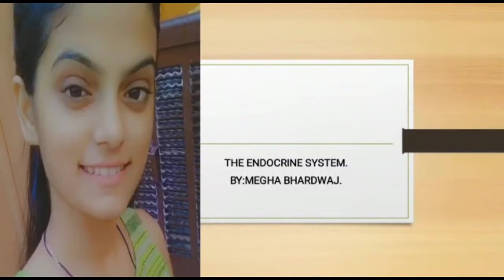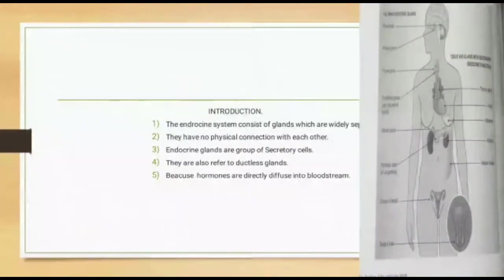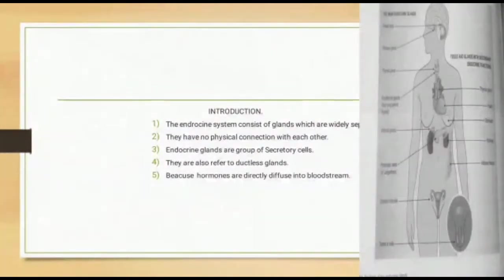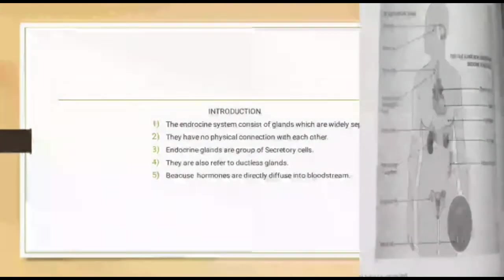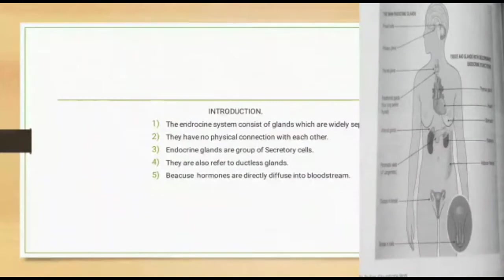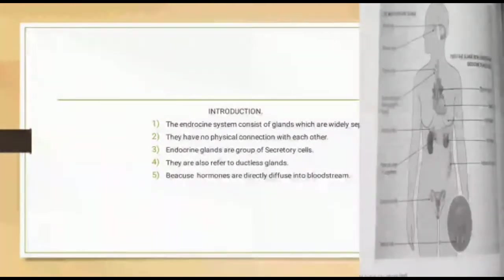Introduction: the endocrine system consists of glands which are widely separated and have no physical connection with each other. Endocrine glands are a group of secretory cells, also referred to as ductless glands, because hormones are directly diffused into the bloodstream.